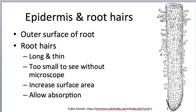The outside of the root, just like other organs, is covered at least initially by epidermis. The epidermis is where root hairs are attached, as you can see in this diagram. Root hairs are long and thin — typically on the scale of millimeters, maybe up to a centimeter. They are thin, too small to see with the naked eye, so you won't actually see these projections if you look at the root.